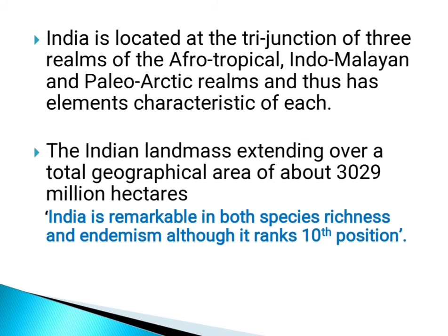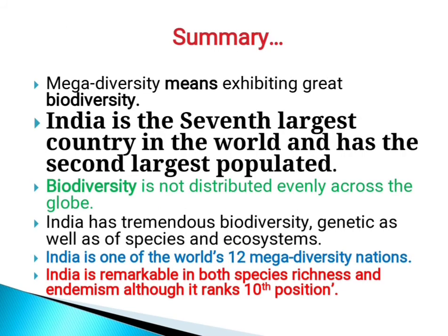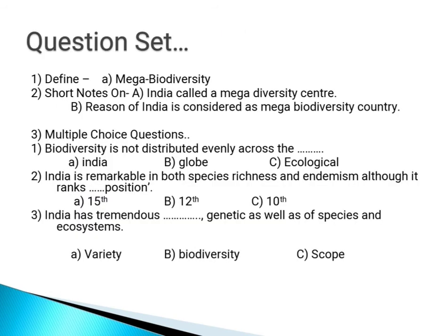To summarize: mega diversity means exhibiting great biodiversity. India is the seventh largest country in the world and the second most populated. Biodiversity is not distributed evenly across the globe due to the diverse nature of the environment. India is one of the world's 12 mega diverse nations and is remarkable in both species richness and endemism, although it ranks at the 10th position.